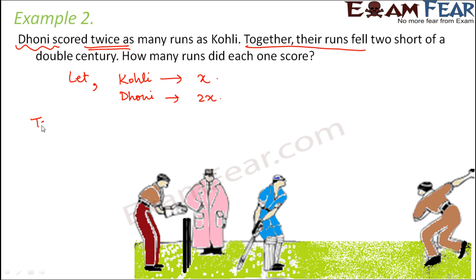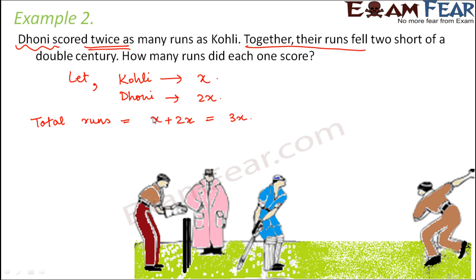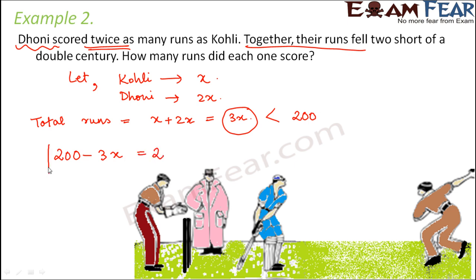Now the total runs of Dhoni and Kohli together would be x plus 2x, which is 3x. As per the question, this 3x is less than a double century by 2. One century is 100, so double century is 200. The question says 3x is less than 200 by 2, meaning the difference between 200 and 3x is equal to 2. So this is our simple equation: 200 minus 3x equals 2.